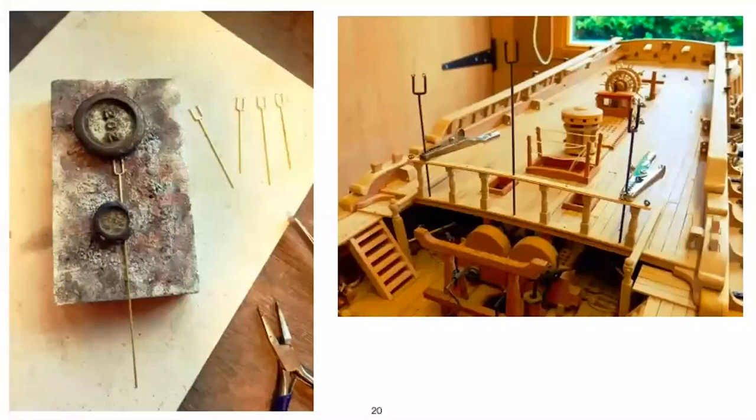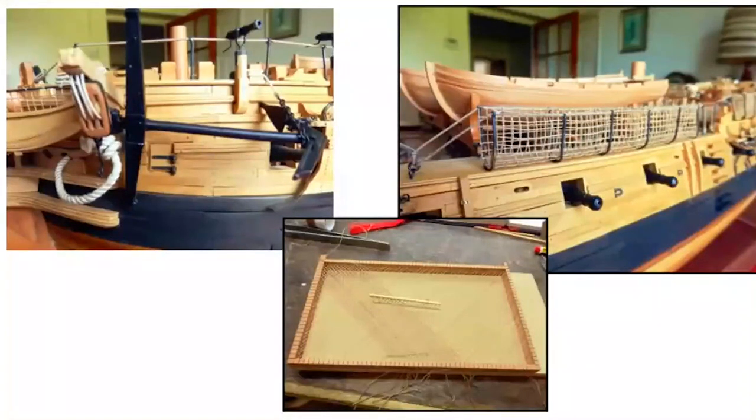Stanchions and hammock cradles were made of brass and again silver soldered and then blackened. On the left I am making the hammock cradles for the breast rail, and on the right they are being fitted. They're much too long at this stage and are waiting to be trimmed down. The left slide shows some more of my deck metalwork with the foc'sle stanchions in place and rigged with their top rope. The right slide shows the hammock cradles at the waist of the ship.